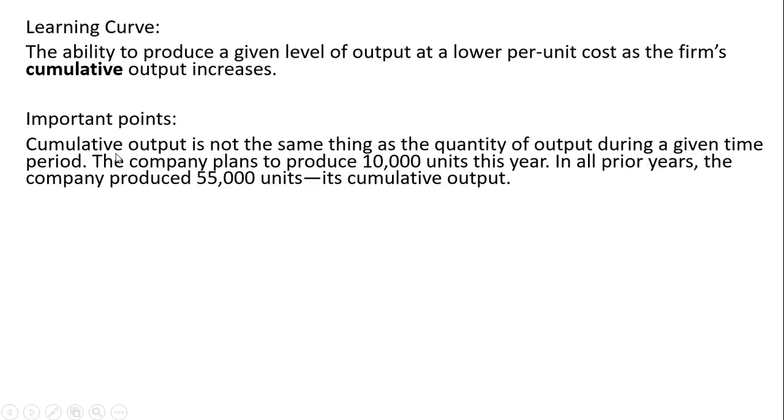Some important points. Cumulative output is not the same thing as the quantity of output during a given time period. The company plans to produce 10,000 units this year. In all prior years, the company produced 55,000 units—that would be its cumulative output.